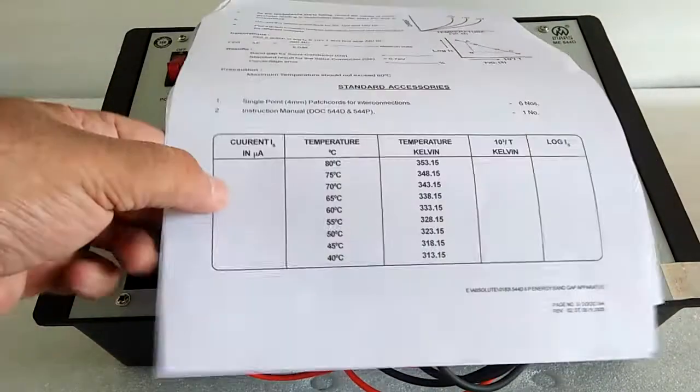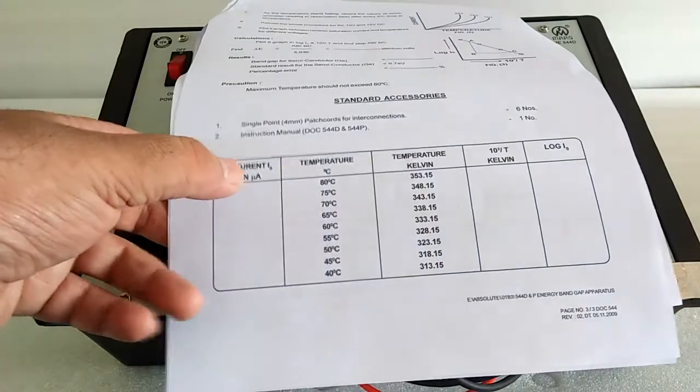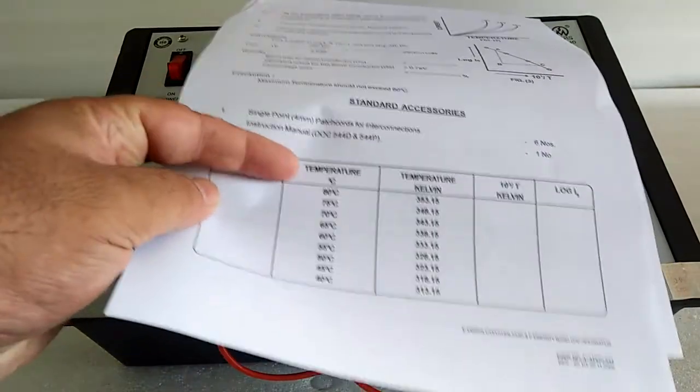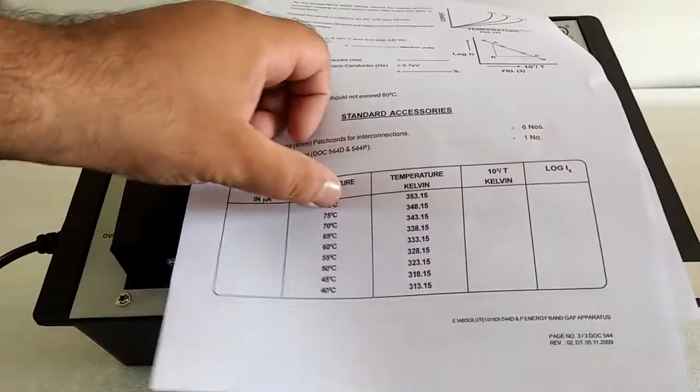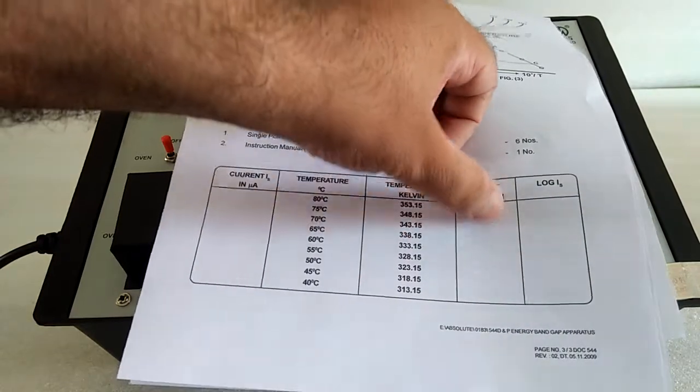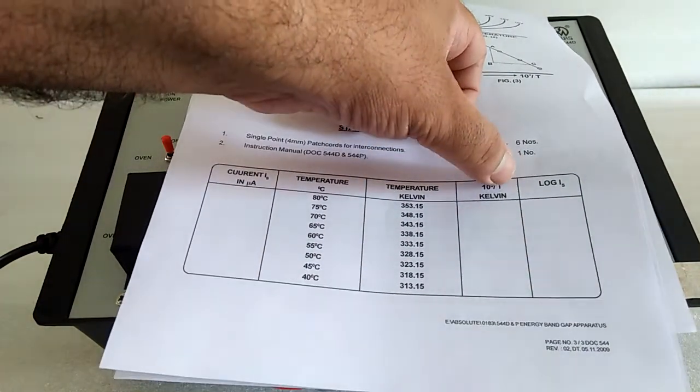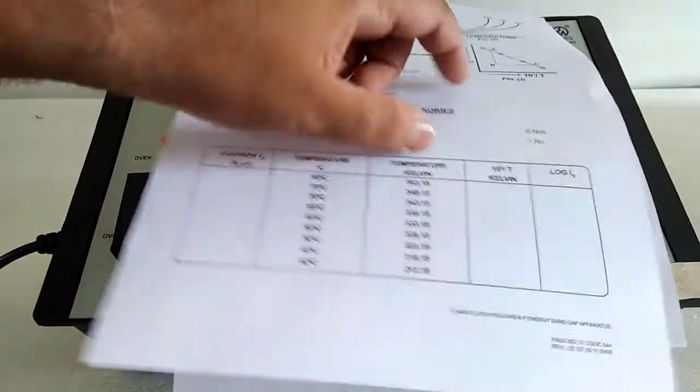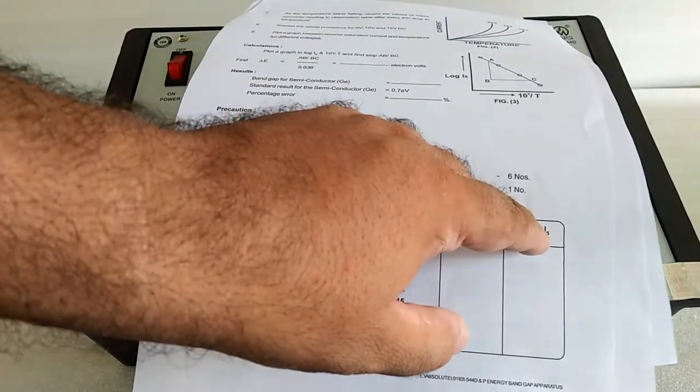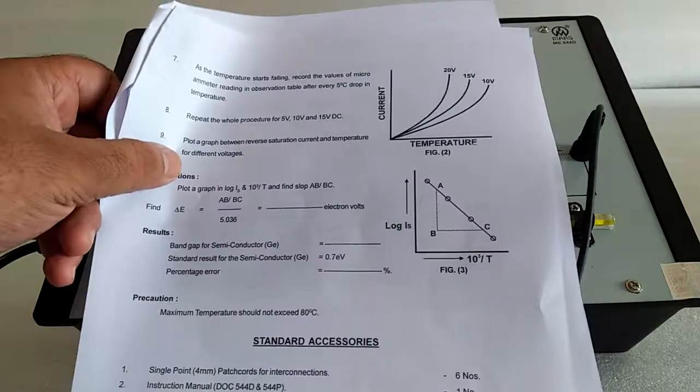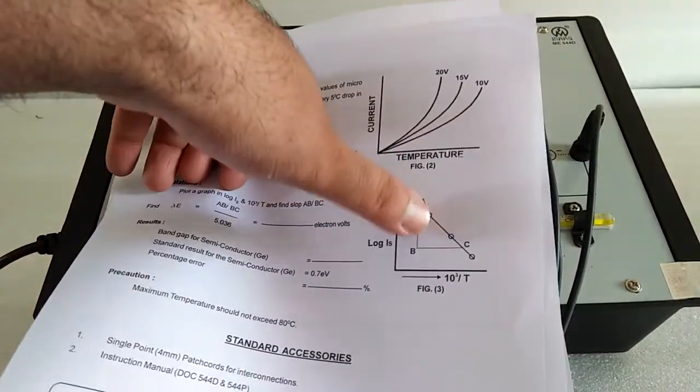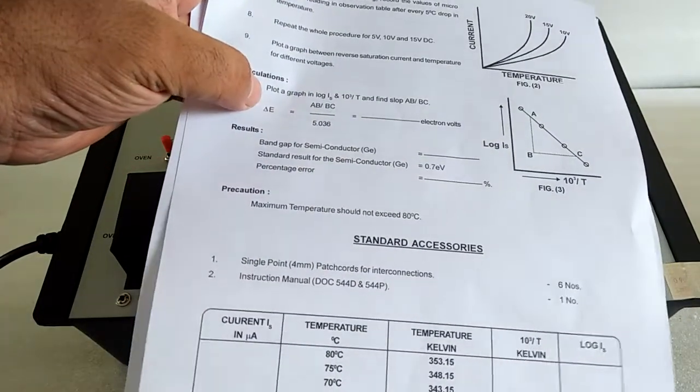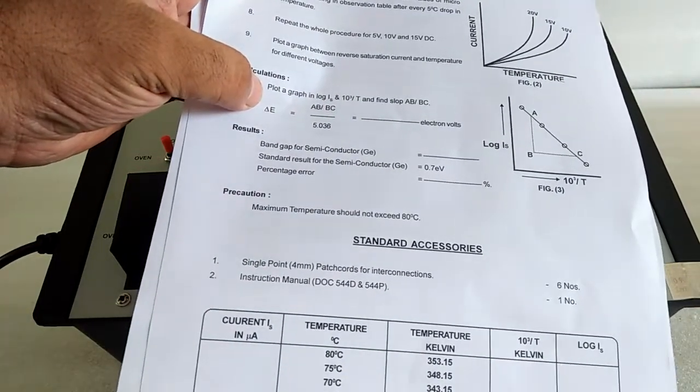Here is the table for current. We have set the voltage fixed, then note down the current at different temperatures. Change the temperature into Kelvin. Then find 10 to the power 3 divided by temperature. Then log of current. Make the graph between these two values. Find the slope and put the slope in this formula to find the band gap for the semiconductor.